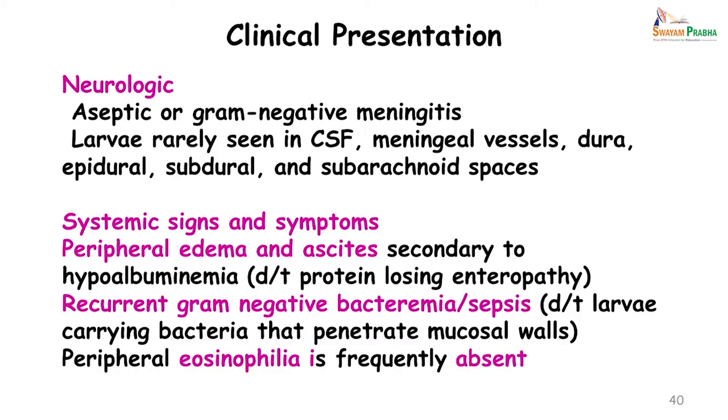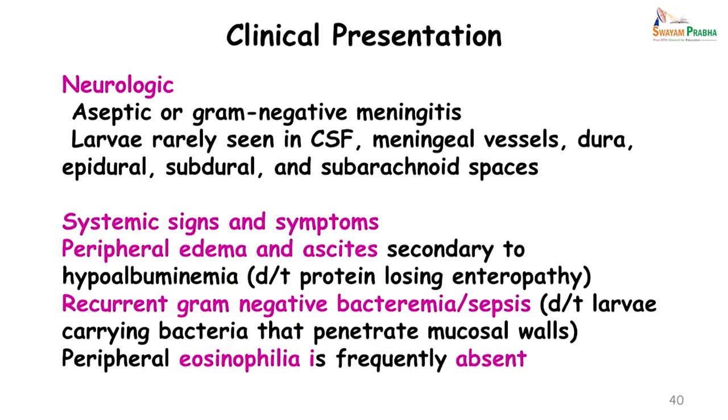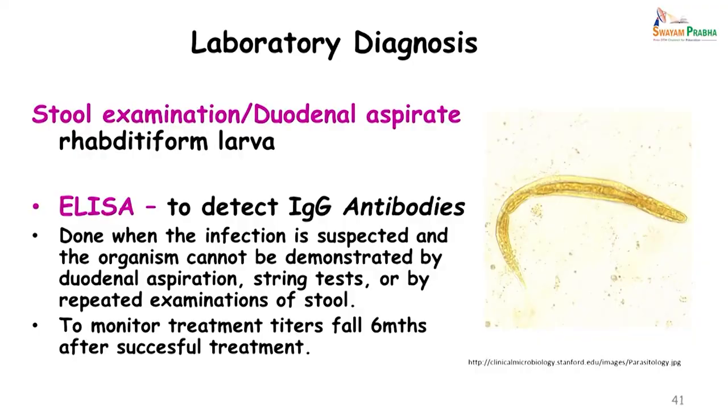To summarize the clinical presentations: you can have an acute infection, a chronic or persistent infection, or either hyperinfection or disseminated strongyloidiasis due to reduced immunity — basically immunosuppression.